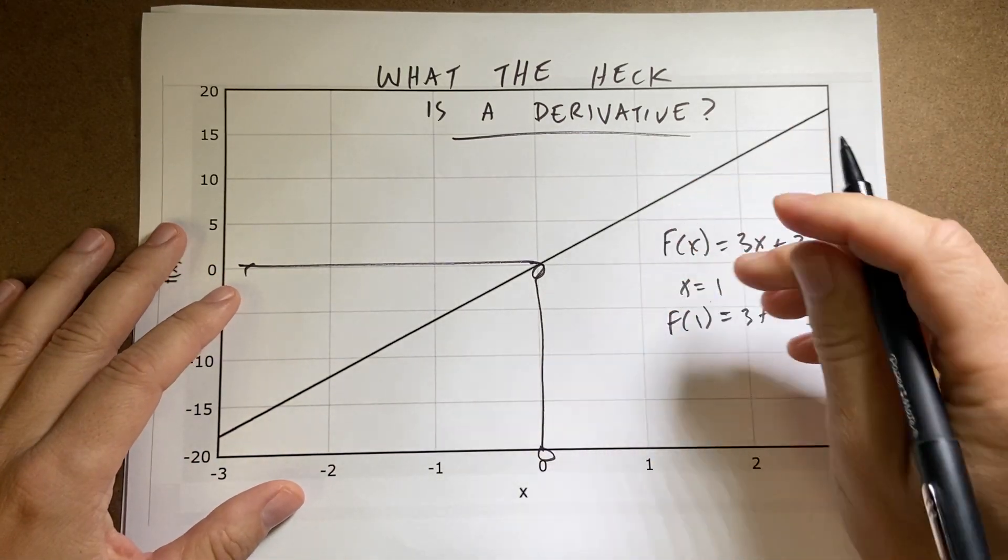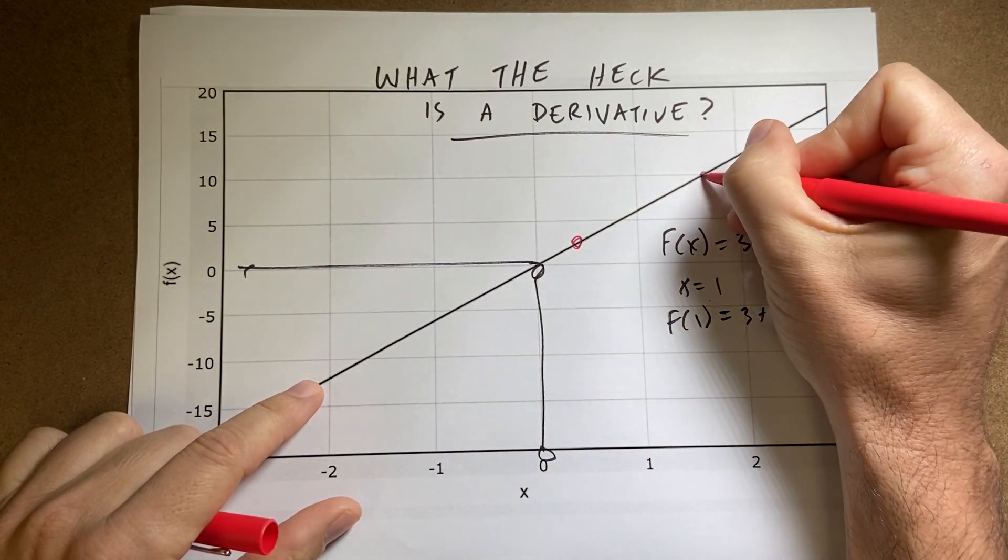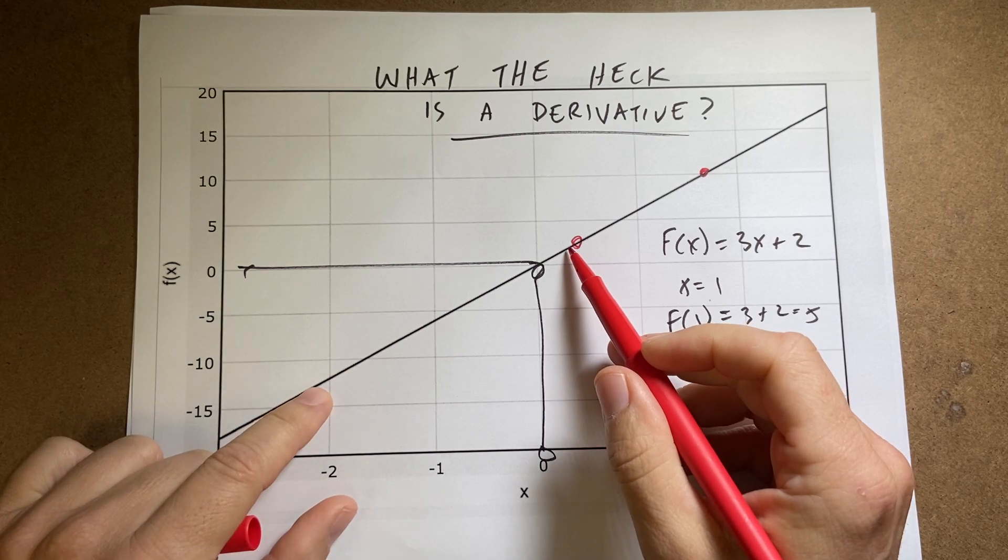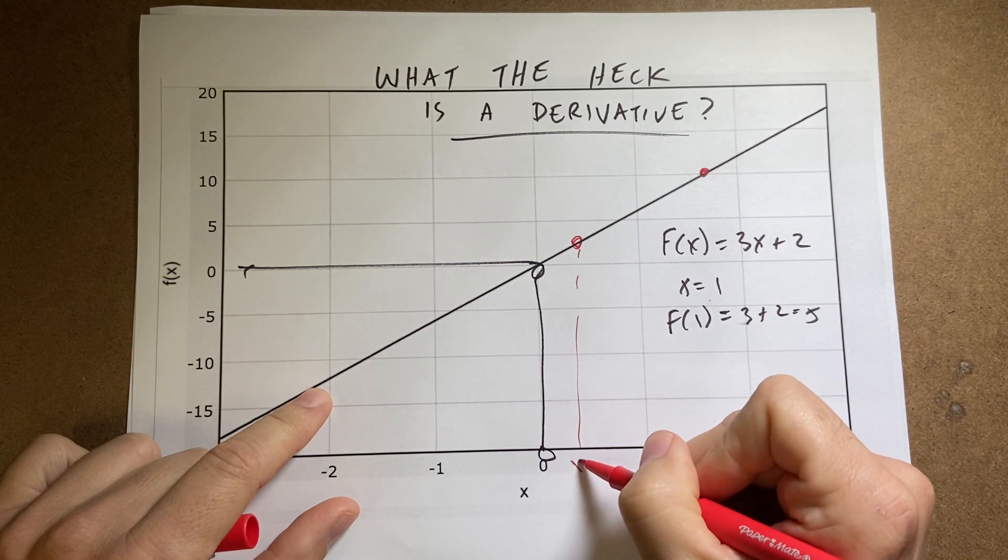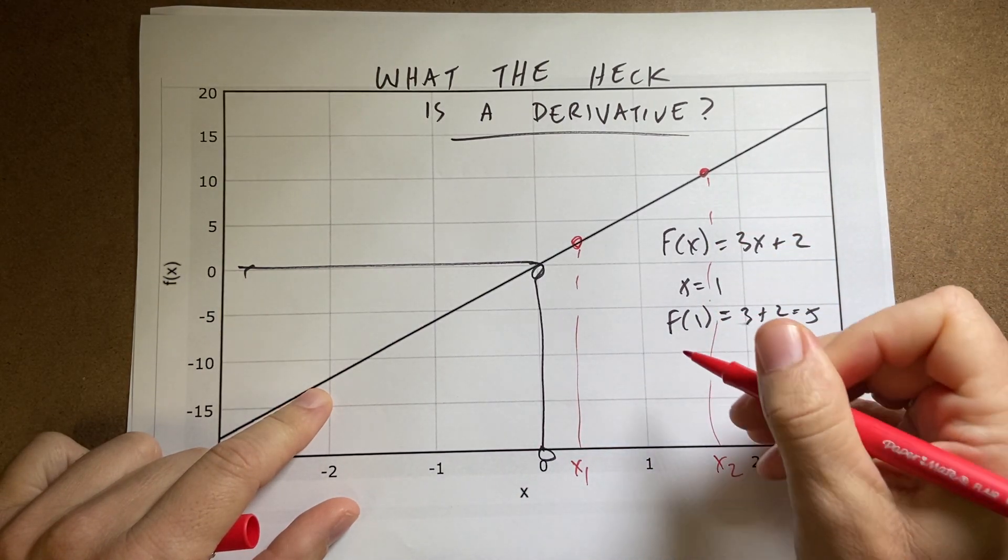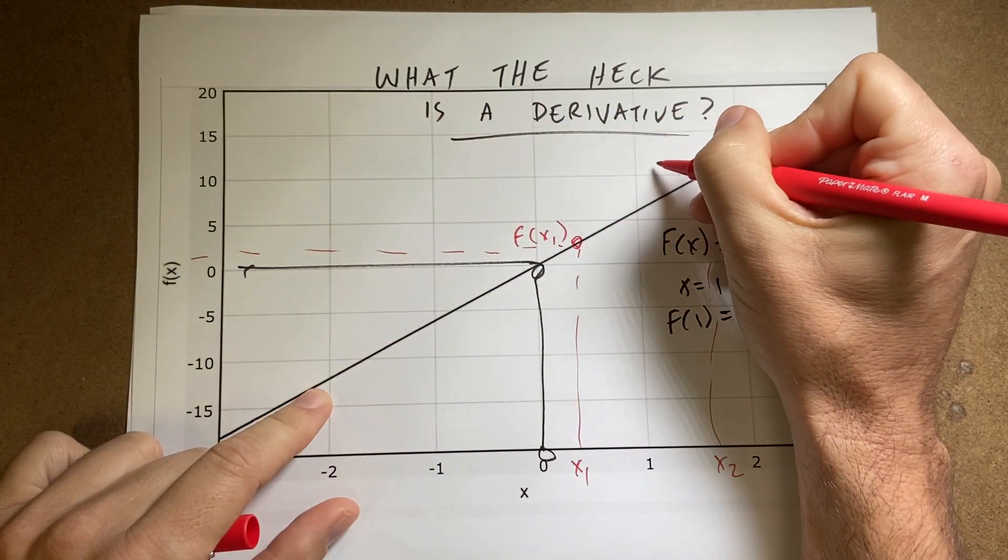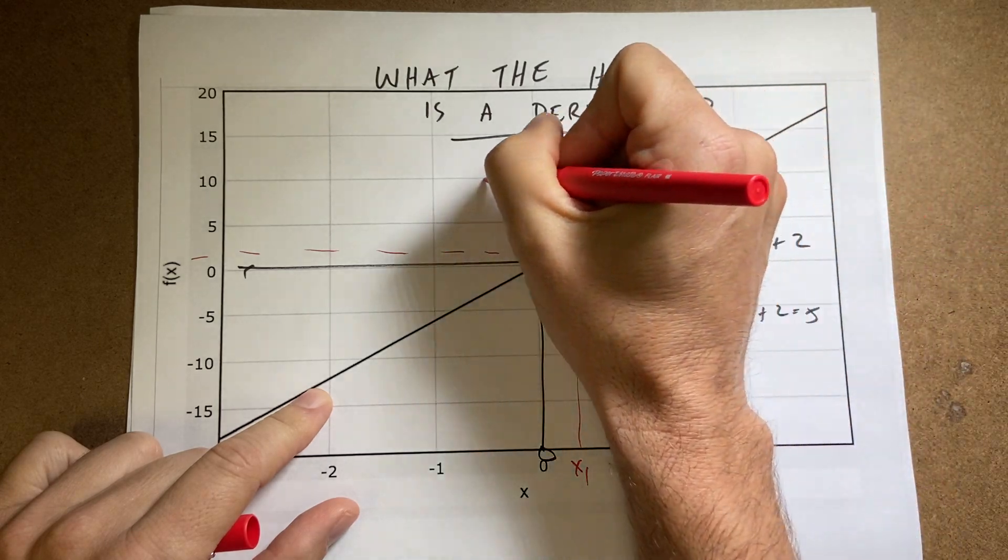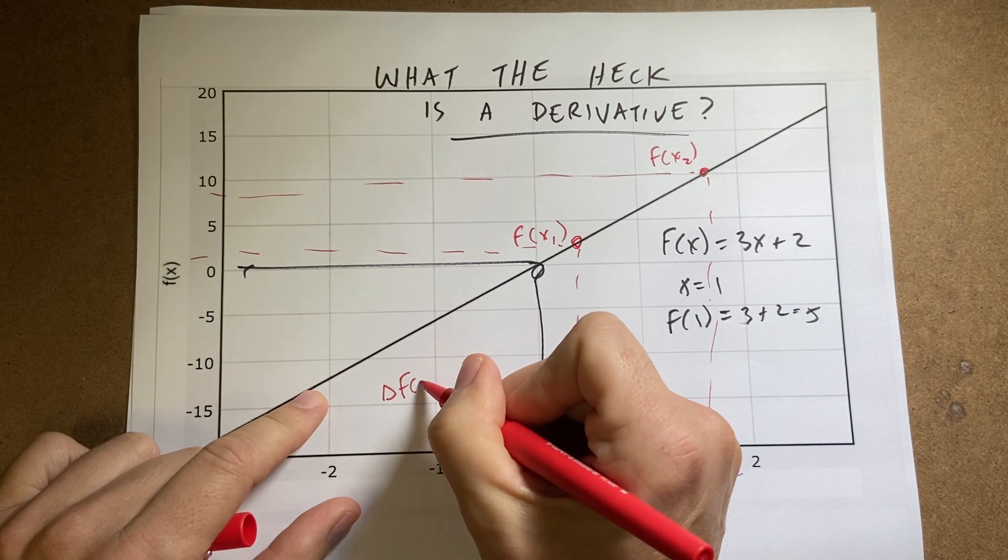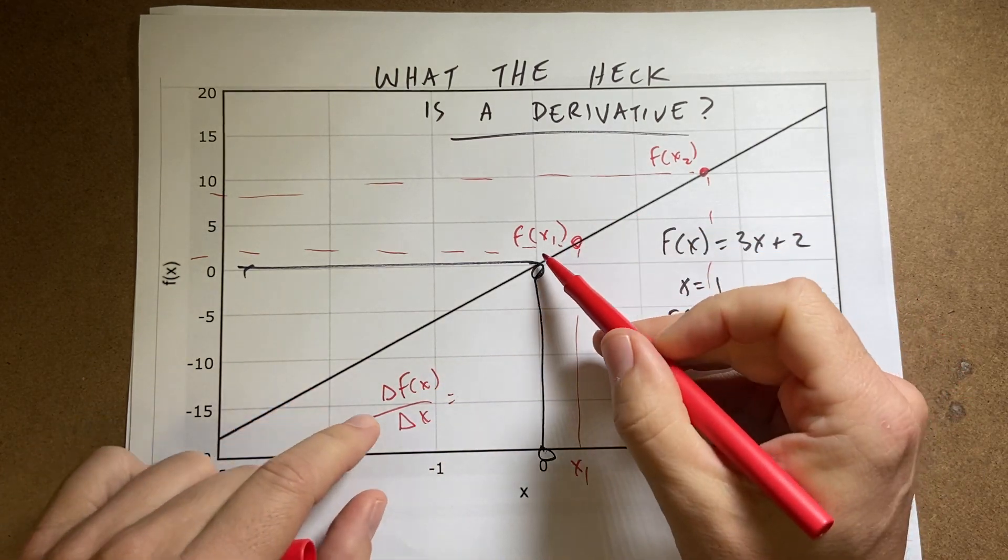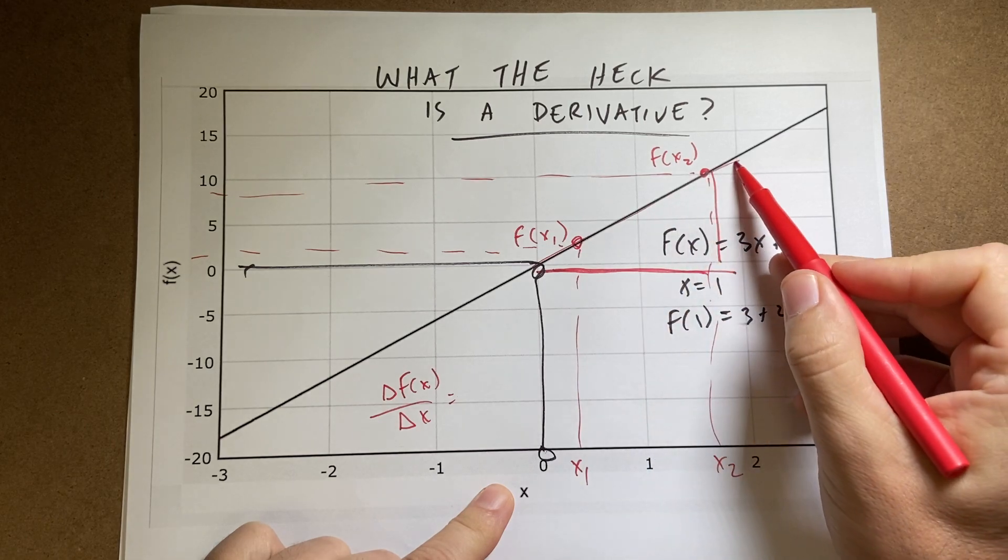What's the slope? What if I pick two points on here? And I find, let's call this x1 and this is x2. So this would be f of x1 and this is f of x2. So what if I did the change in f of x over the change in x? That would be how much it goes up divided by how much it goes over. And that's the slope of this line.